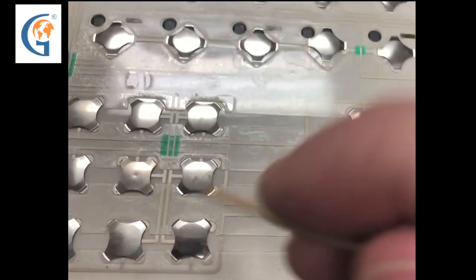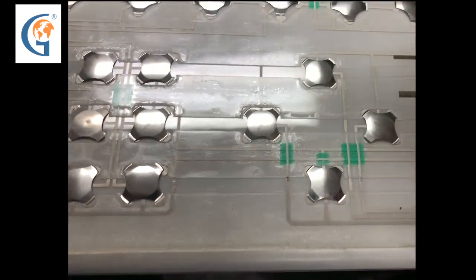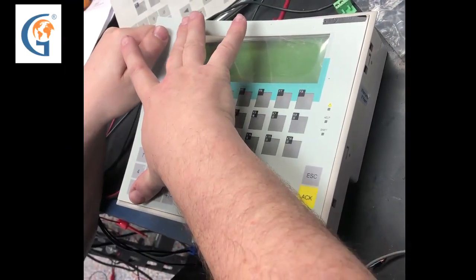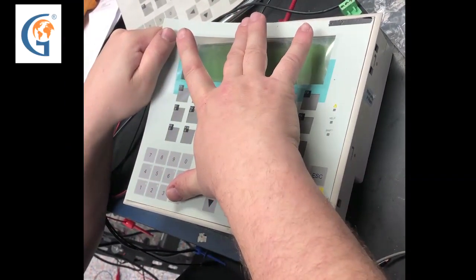Now that we have replaced our bad buttons and realigned all the buttons, it's time to put our new membrane on. This is done slowly to make sure the membrane makes contact with each button.